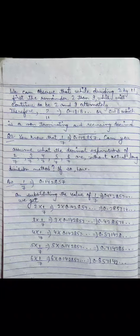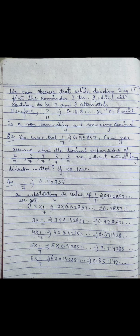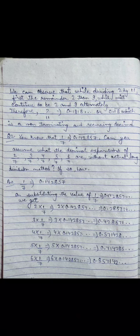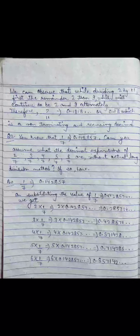Now question number 2: You know that 1 upon 7 equals 0.142857 (with a bar over 142857). The bar over digits means those digits repeat when dividing. The question asks: can you find the decimal expansions of 2/7, 3/7, 4/7, 5/7, and 6/7 without actually using the long division method?